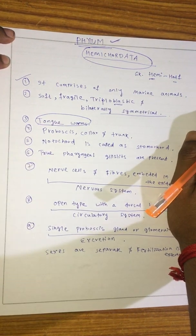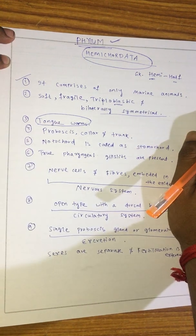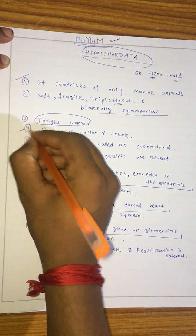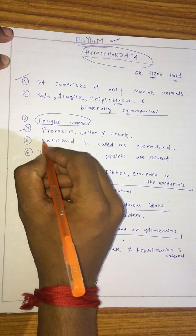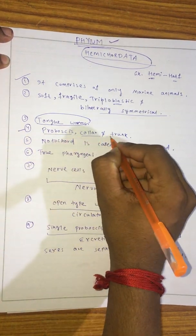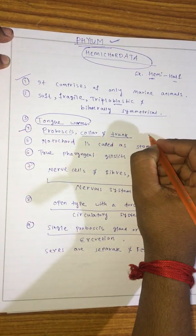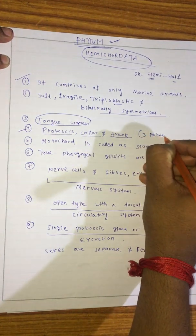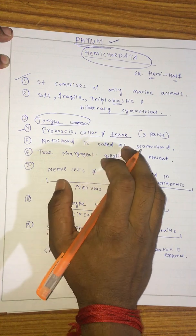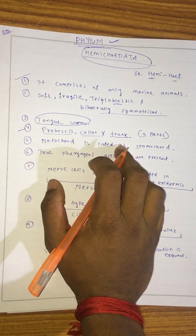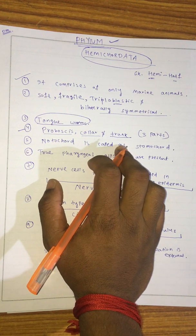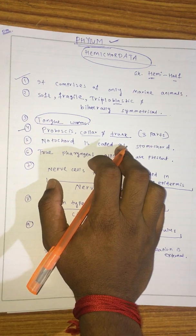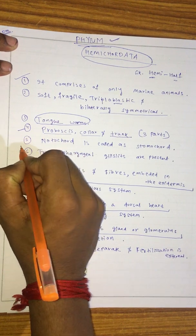The body of the worm is divisible into three parts: proboscis, collar, and trunk.